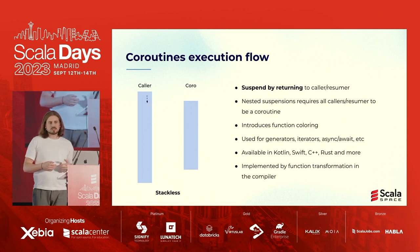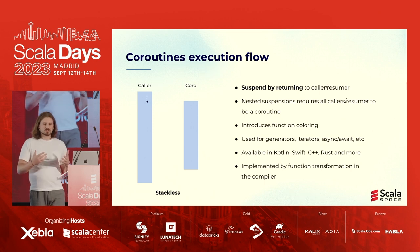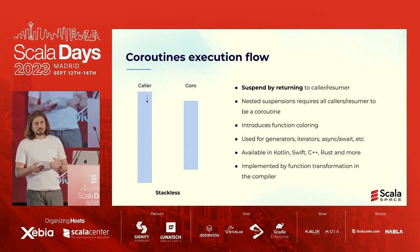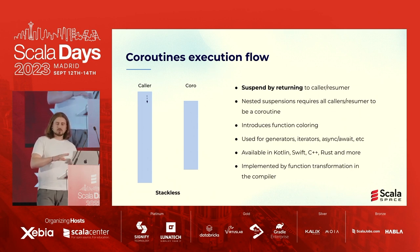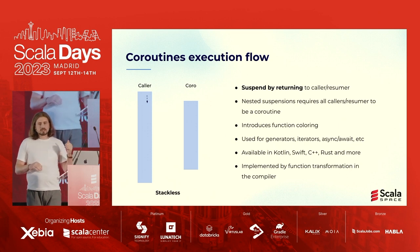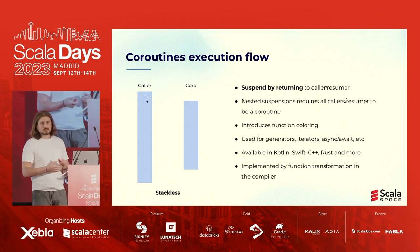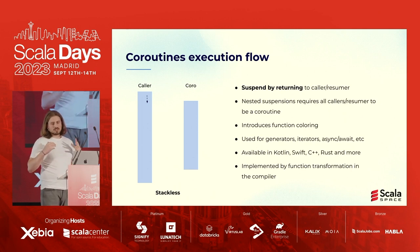That of course introduces some limitations — for example, the problem of function coloring, where all functions we call need to be either synchronous or asynchronous in terms of async/await. This type of coroutine exists in Kotlin by default with its async/await, but also powers Swift coroutines, Rust, and C++ — which also has coroutines since C++20. Importantly, to make them work we need to make some code transformations.